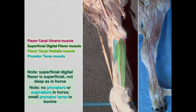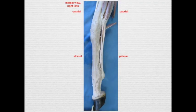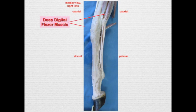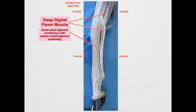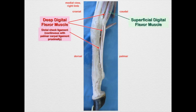Let's follow the superficial and deep digital flexor tendons distally. Here's the deep digital flexor muscle in pink. We find that there's a structure coming from the palmar carpal ligament — remember that palmar carpal ligament was a thickening of the joint capsule on the palmar aspect of the carpus — and it is going to join the deep digital flexor tendon as the distal check ligament. Just remember: distal goes to deep, DD. We also find in the superficial digital flexor muscle there is a proximal check ligament.